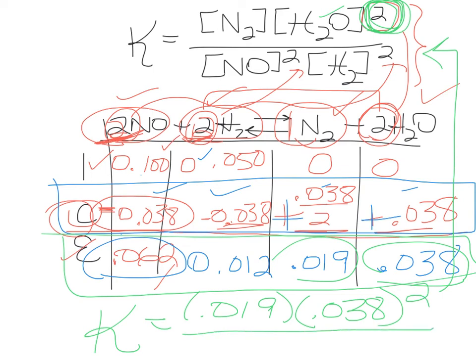And the reactants in the denominator, concentration of nitrogen monoxide, so that's 0.062. And that has a square. And then times hydrogen, which is 0.012, also squared.